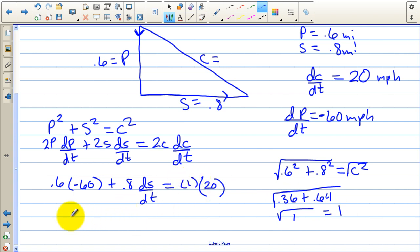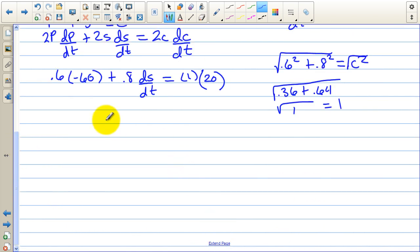Now we just have to get DS DT all by itself and we got it. So DS DT equals 20 plus 36, that's what 0.6 times negative 60 is. And then we have to divide that by 0.8, which is equal to 70 miles per hour. And there's the answer to the question, how fast was the car going?